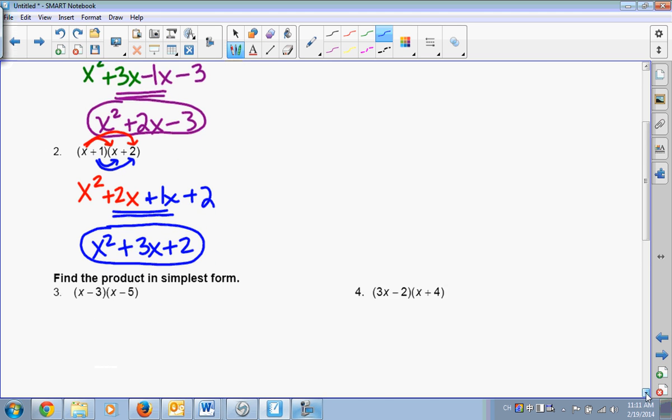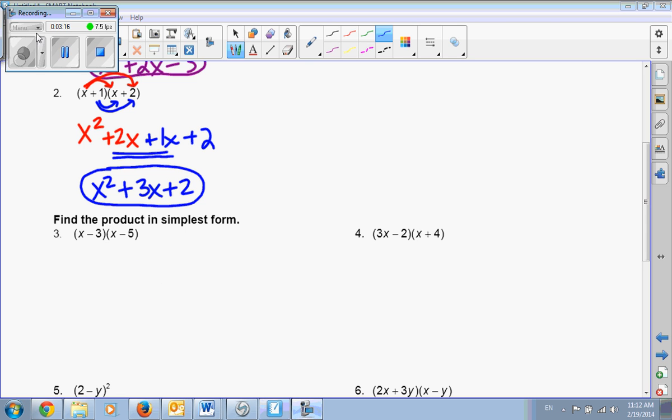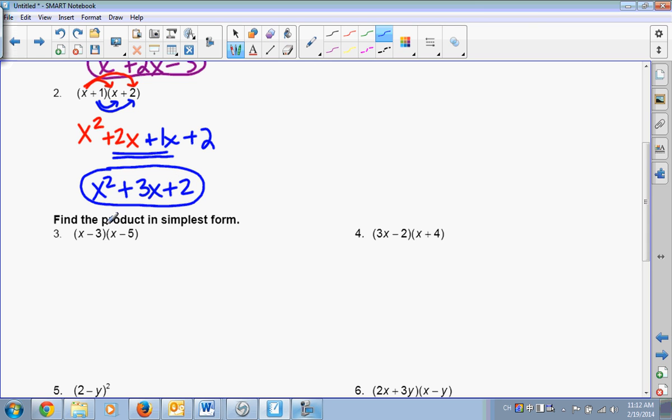Okay, I want you guys to try number 3 on your own. All right. So x times x is x squared. x times negative 5? Negative 5x. Then distribute the negative 3. Negative 3 times x? Negative 3x. And negative 3 times negative 5? 15. Positive 15. Good. And these two are common. They're like terms. So x squared minus 5x and minus 3x is? Yes. Minus 8x. And plus 15.